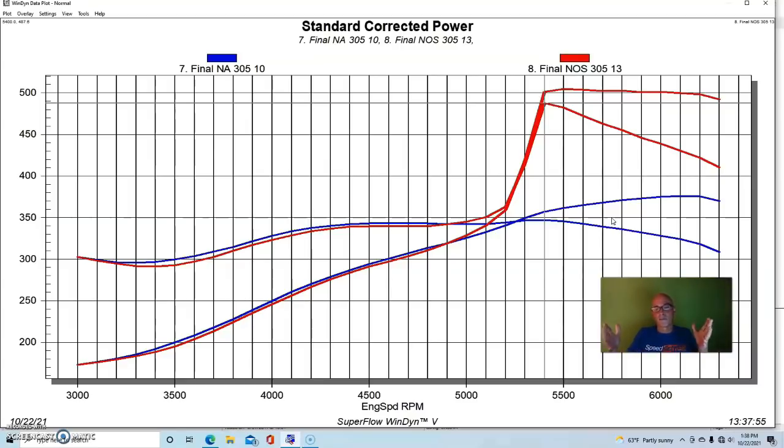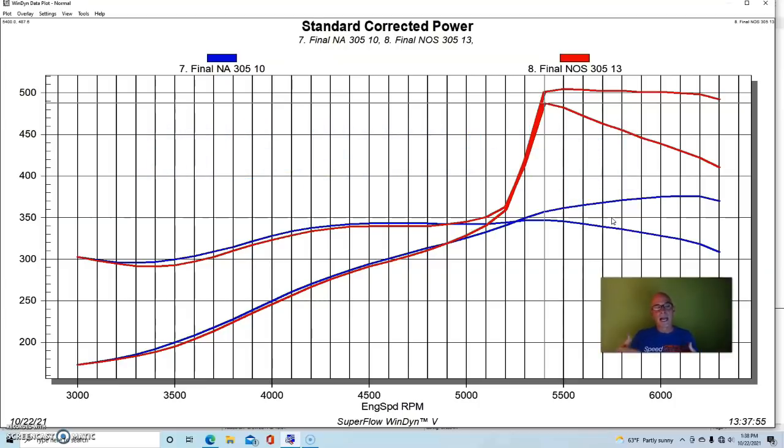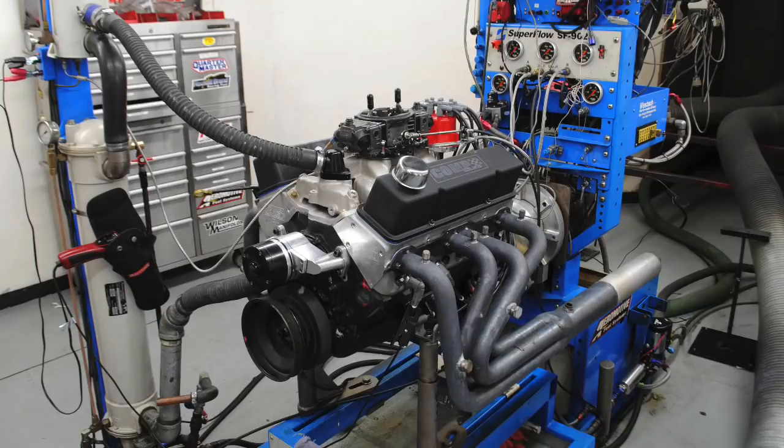The cool thing about this, and this is what I wanted to show, is on our first power adder you're taking a 375 horsepower motor and immediately, very easily, and inexpensively turning it into a 500 horsepower motor. Obviously that's going to do nothing but good things to acceleration. Now that we know the 305 works with nitrous, let's check out a slightly larger 350.